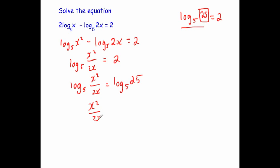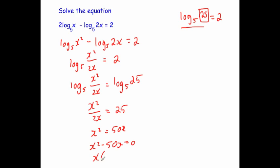Now solve the equation. Multiply both sides by 2x to get x squared equals 50x, then bring it over to get x squared minus 50x equals 0. Factorizing gives x(x minus 50) equals 0, so x equals 0 or x equals 50.